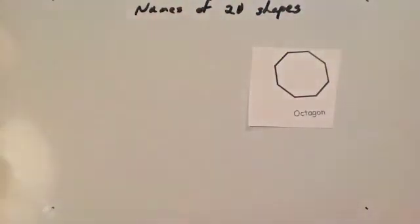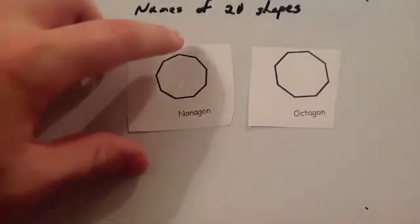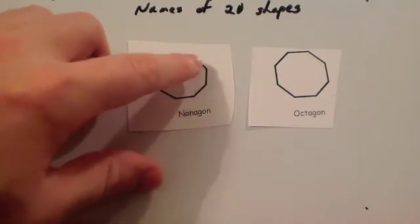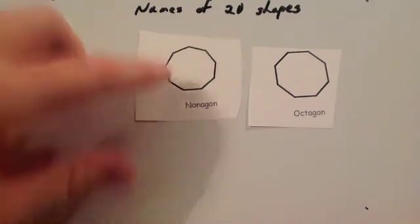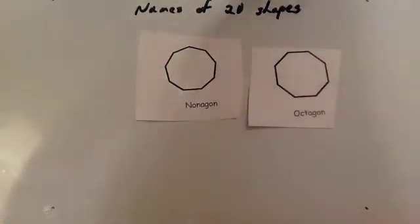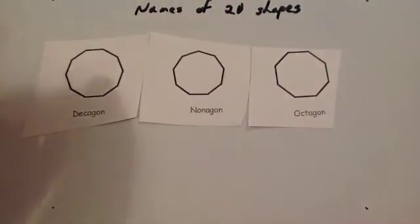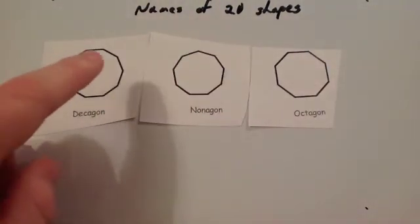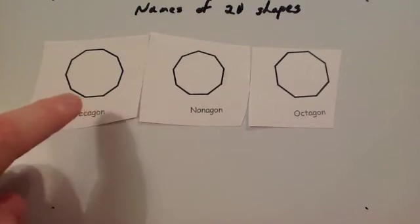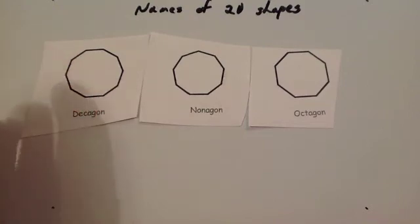9 sides is a nonagon. Nonagon, 9 sides. And a 10-sided shape is called a decagon. And it's got 10 sides. Obviously, there's an 11-sided, 12-sided, and so on.